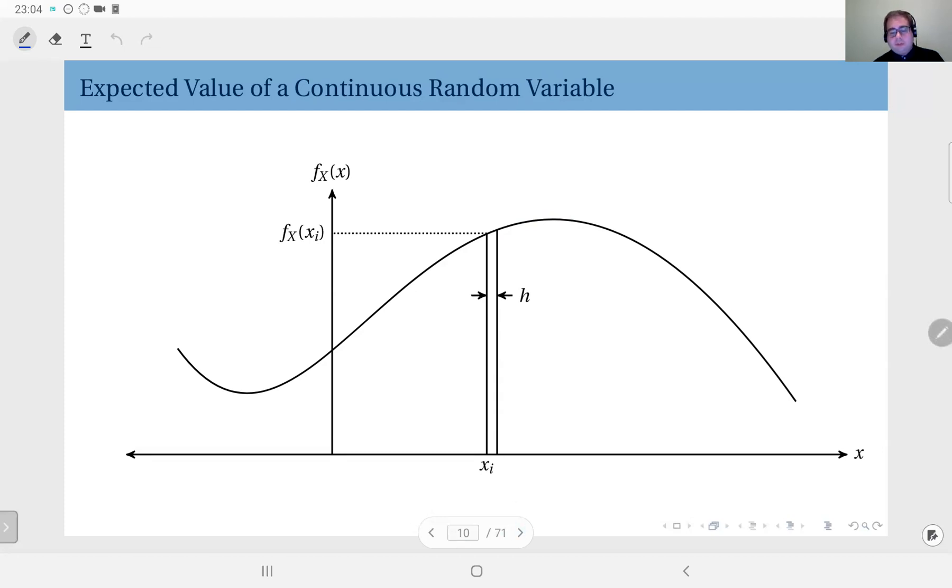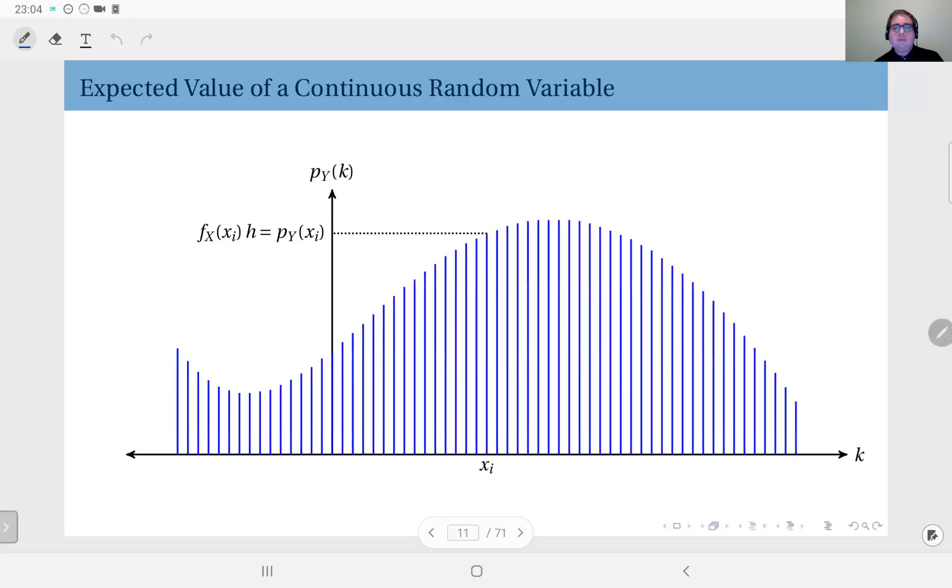So we're going to discretize this pdf, discretize the real line, and approximate this pdf with a discrete distribution. This is what we're going to have—of course I'm assuming this continues in these directions, but this is just a portion we're going to look at—and the pmf values now are proportional to the pdf values.